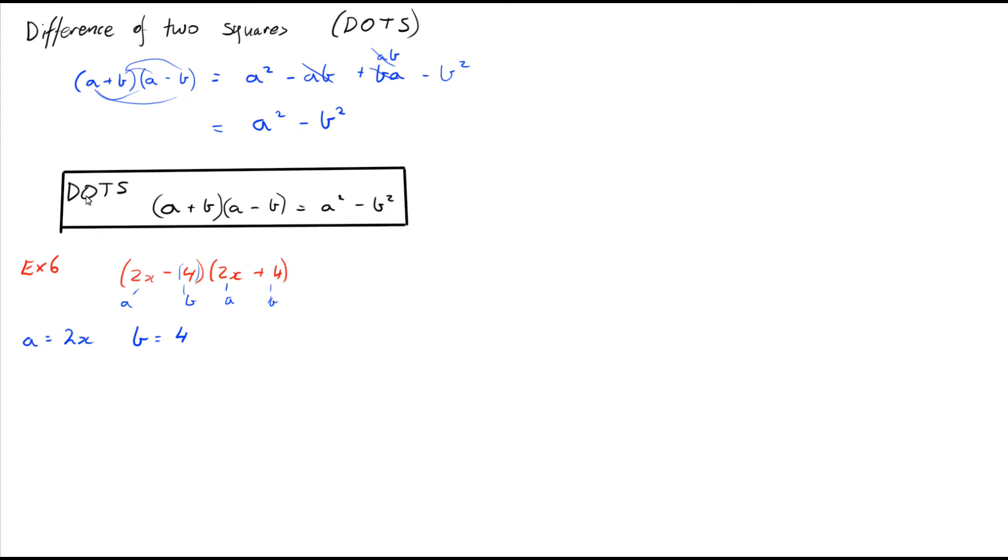So if we've got a difference of two squares with 2x and 4, we can just put in our formula a² - b². So a² would equal 4x² and b² would equal 16. Therefore (2x - 4)(2x + 4) = 4x² - 16.